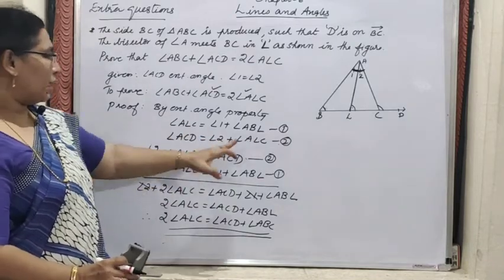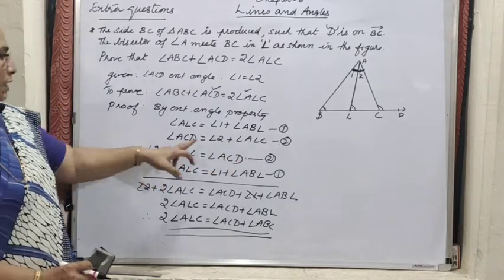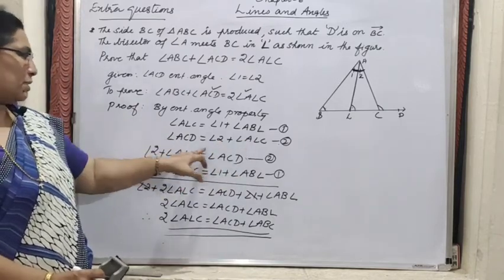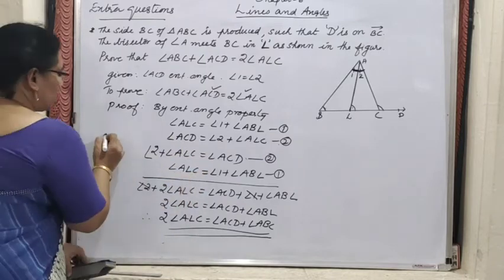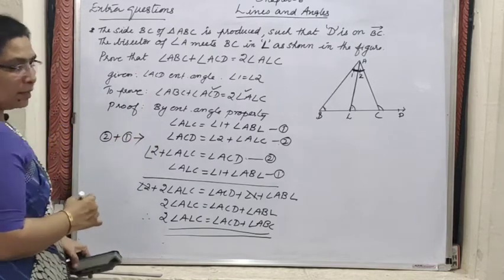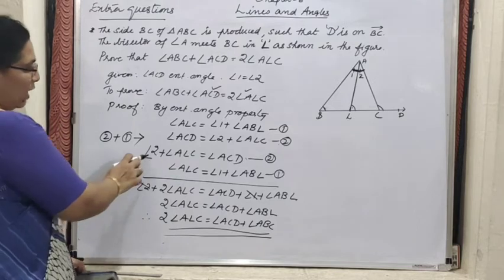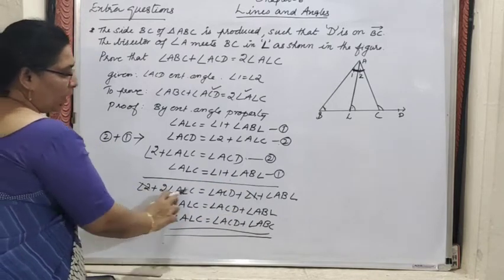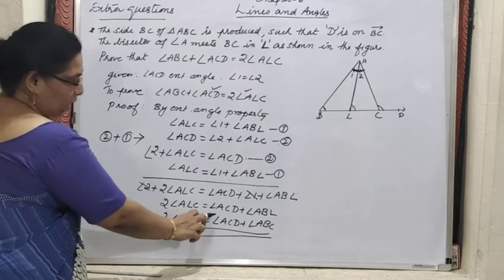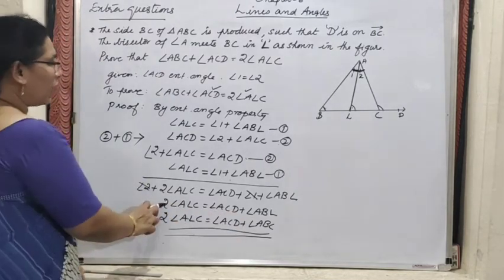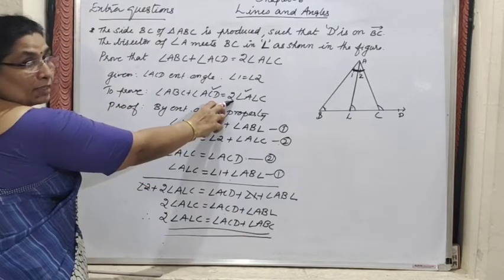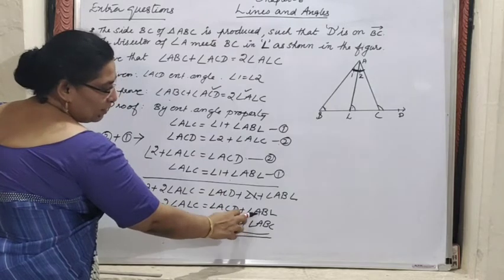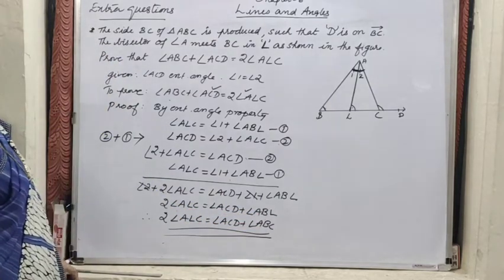Since we want 2 × angle ALC, we interchanged equation 2 — right side became left side. So angle 2 plus angle ALC equals ACD. Adding the equations, angle 2 plus angle ALC plus angle ALC equals ACD plus angle 1 plus ABL. Angle 1 and angle 2 cancel, giving 2 times angle ALC equals angle ACD plus ABL. Since ABL and ABC are the same angle (ray BL extended to BC), we get 2 times angle ALC equals angle ACD plus angle ABC. Hence proved.